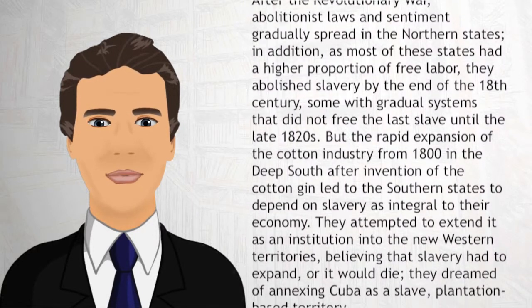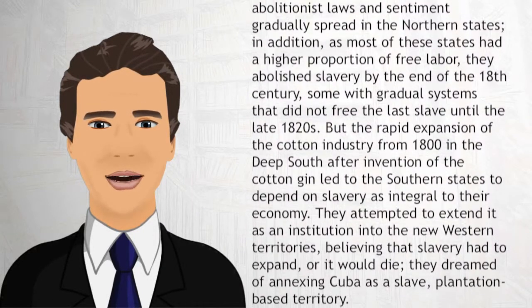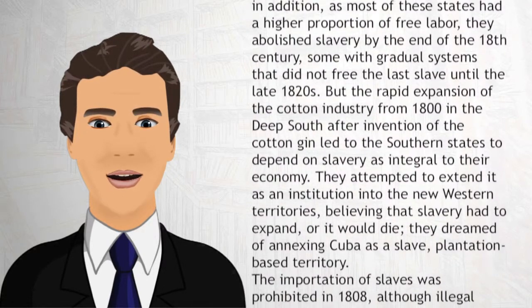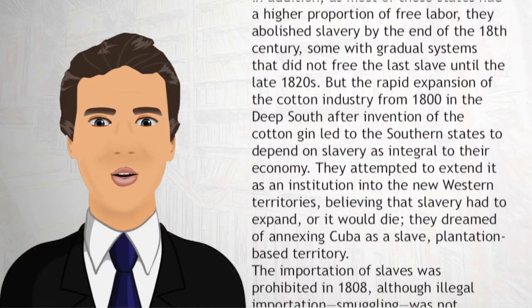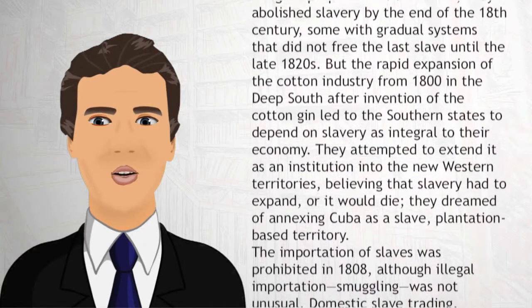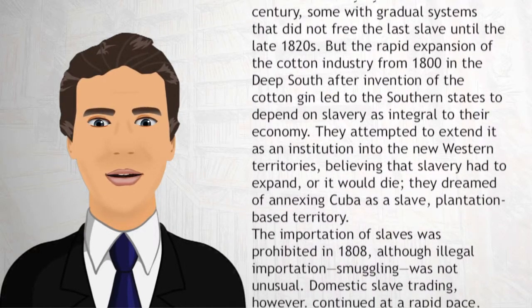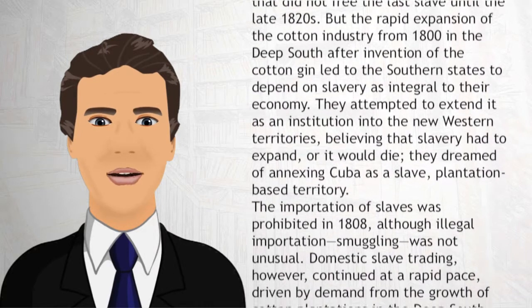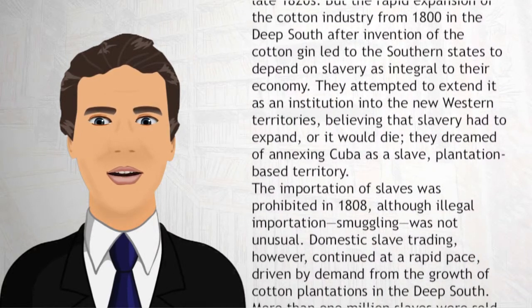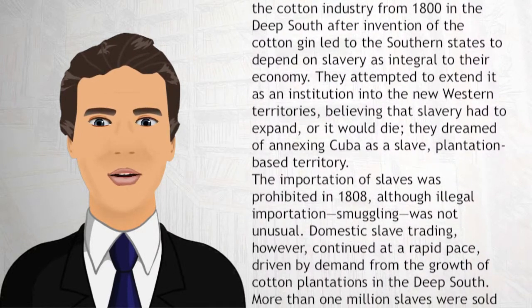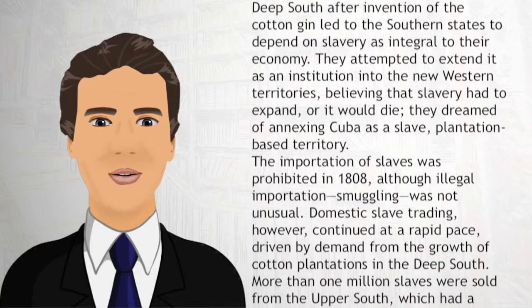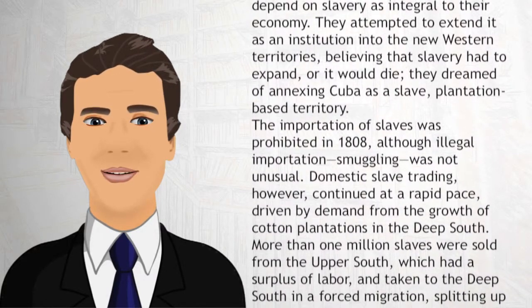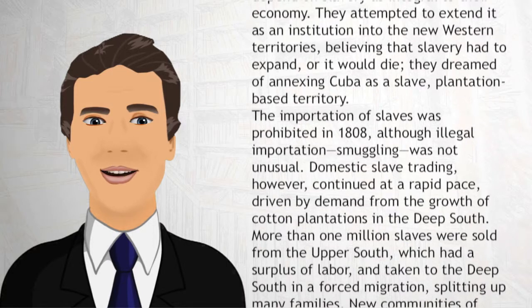But the rapid expansion of the cotton industry from 1800 in the Deep South, after the invention of the cotton gin, led the southern states to depend on slavery as integral to their economy. They attempted to extend it as an institution into the new western territories, believing that slavery had to expand or it would die. They dreamed of annexing Cuba as a slave, plantation-based territory.